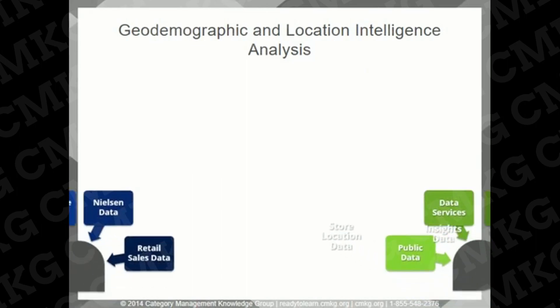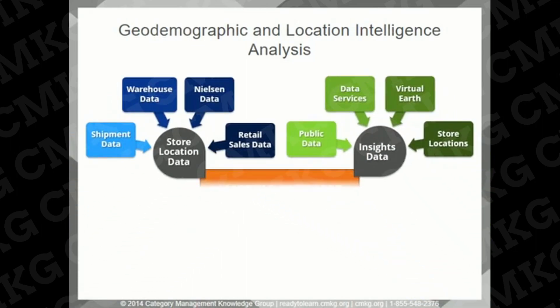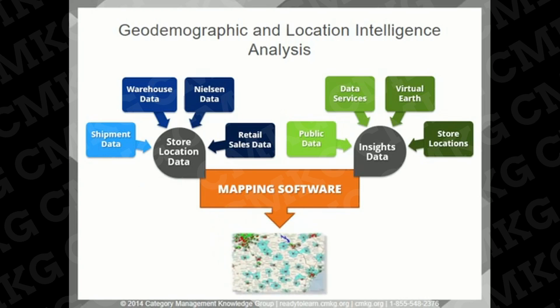Also in the last chapter for this course, we review geodemographic and location intelligence analysis. Mapping software programs give you the opportunity to layer these different types of data together to get amazing insights. By putting the different data types on a map, you can more easily visualize the outputs, rather than trying to look linearly at store-level data across a region and across multiple data sources.